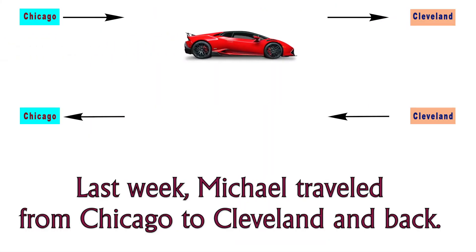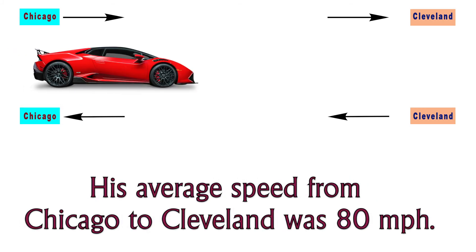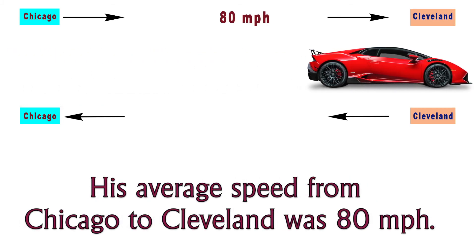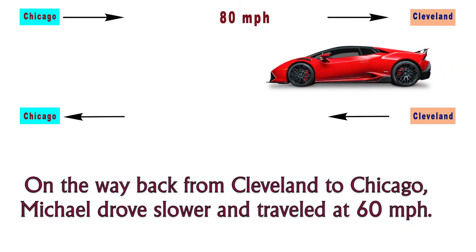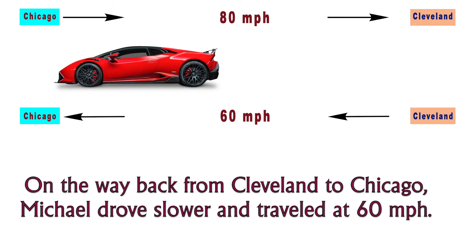Last week, Michael traveled from Chicago to Cleveland and back. His average speed from Chicago to Cleveland was 80 miles per hour. On the way back from Cleveland to Chicago, Michael drove slower and traveled at 60 miles per hour.